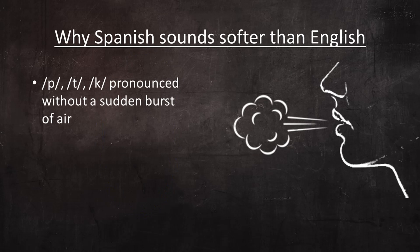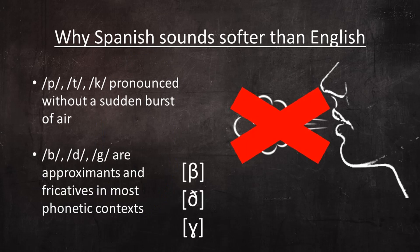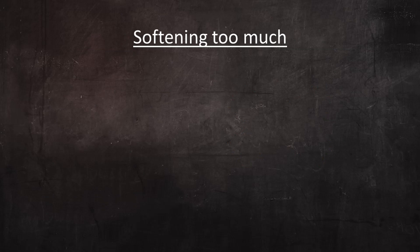Spanish unvoiced stops are pronounced without a sudden release of air, and their voiced counterparts are actually pronounced as approximants and fricatives in most phonetic contexts. As I mentioned at the beginning of this video, most Spanish students never learn these principles, and they pronounce these sounds just as they would in English, which sounds too hard to most native Spanish listeners and is a major factor in the stereotypical foreign accent of native English speakers. But I also mentioned that some students take their pronunciation too far in the other direction, and soften these sounds too much. How exactly do they do that?